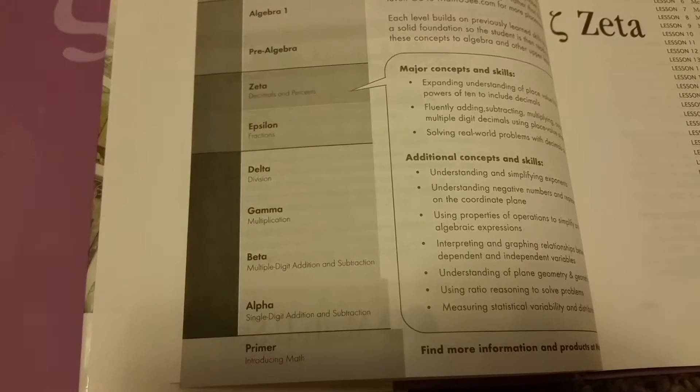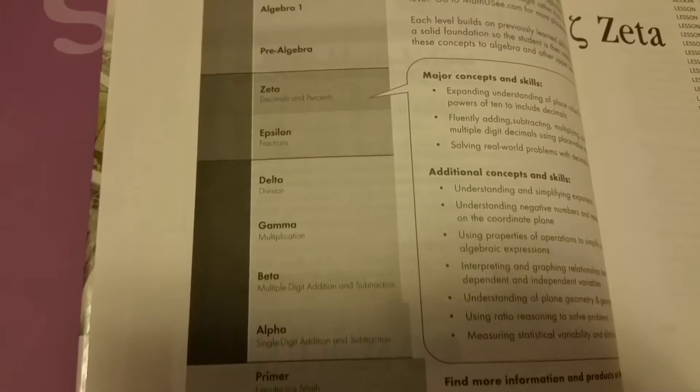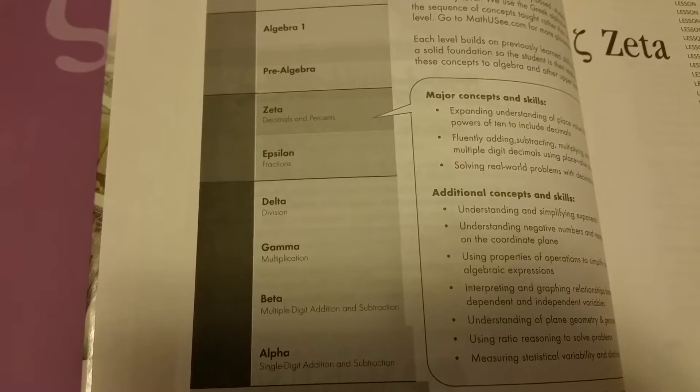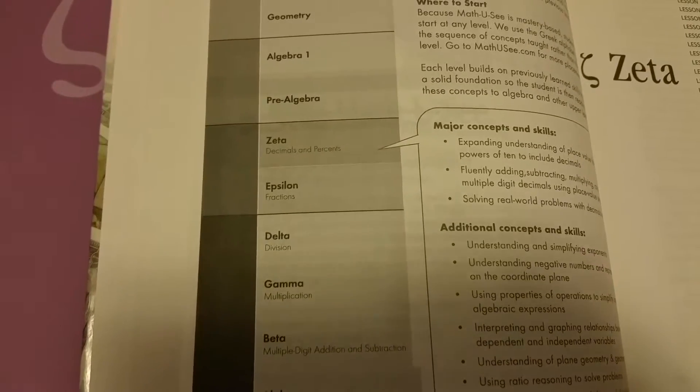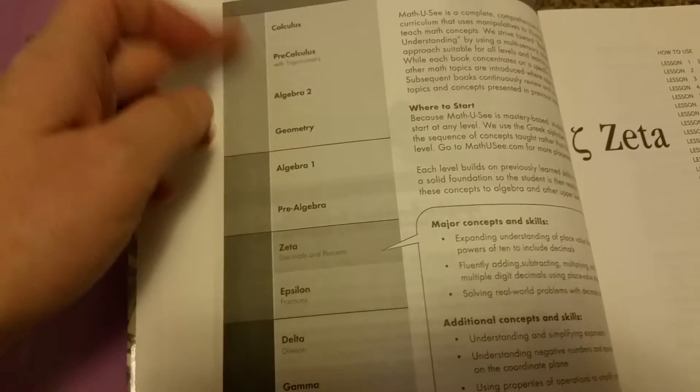And then you go up. So it's single digit addition, subtraction, multiple digit, multiplication, division, epsilon is fractions, and zeta, which is this one, is decimals and percents. So it kind of builds on each other before you enter these.